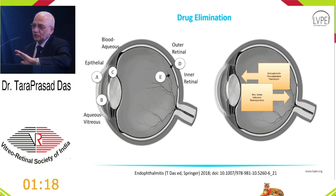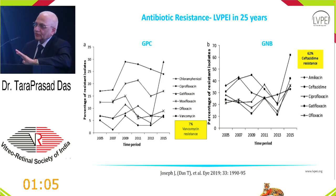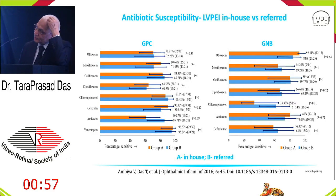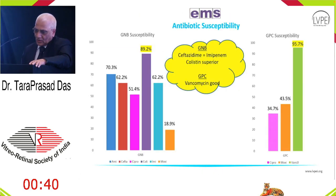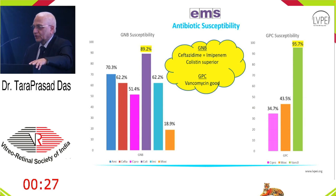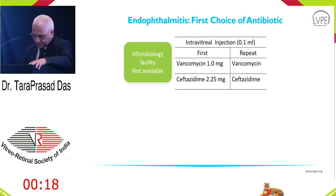Drug elimination from the eye occurs via six routes — some anterior, some posterior, some combined. Over 25 years at our institute, vancomycin resistance has risen to 7 percent, but ceftazidime resistance has risen to 62 percent — so think carefully about what you're injecting to save a patient's eye. Looking at referred versus in-house patients, in either case ceftazidime susceptibility is not above 50 to 60 percent. From our ongoing AMS antifungal management study, vancomycin is still good for gram-positive, while for gram-negative, imipenem and ceftazidime are similar, and colistin performs marginally better.